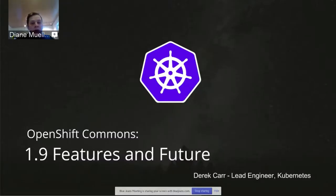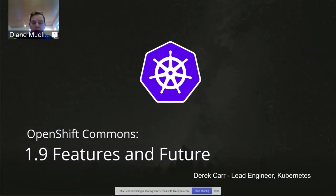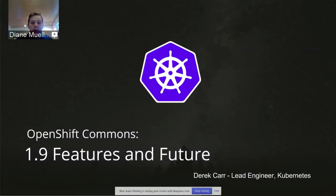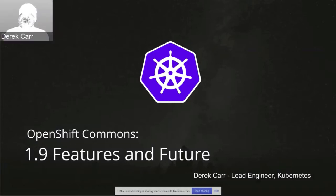Hello everybody, and welcome again to another OpenShift Commons briefing. This time we're kicking off 2018 with a talk on Kubernetes 1.9 — the features, functions, and futures. Derek Carr is our guest speaker today. We are hosting another OpenShift Commons gathering in London on January 31st, so go to commons.openshift.org for information. With that, I'll let Derek take it over.